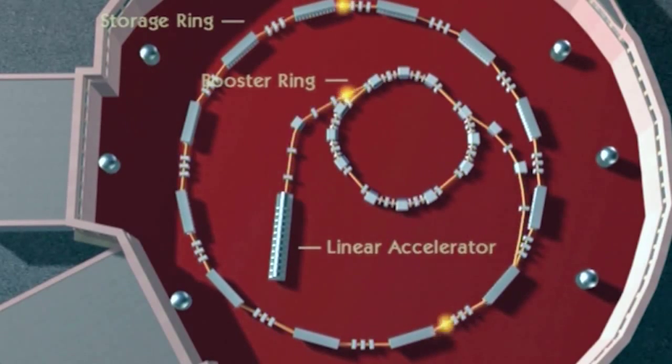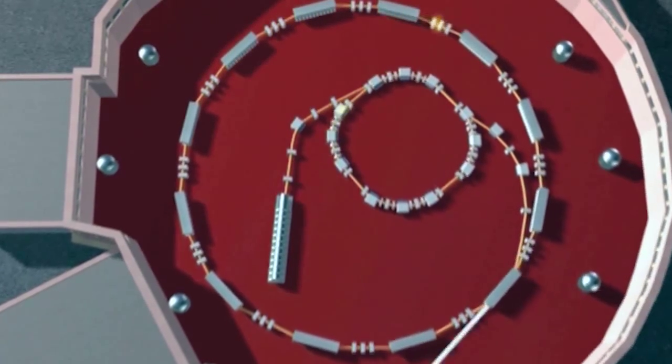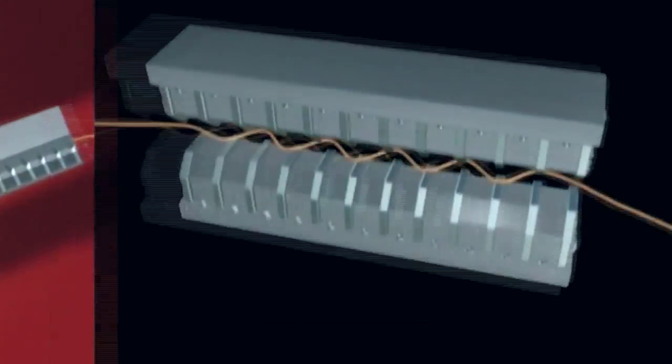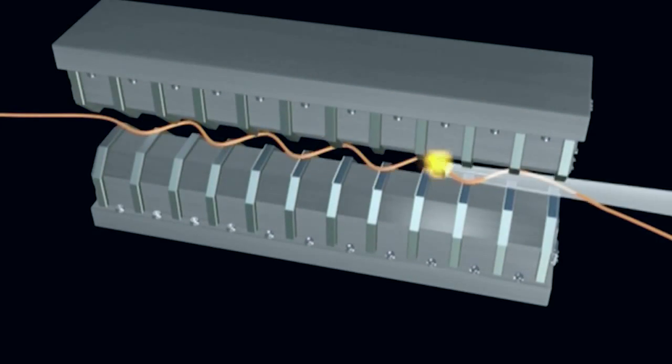From that particle accelerator emerge electrons that are accelerated that produce X-ray beams. We make X-rays by making the electrons wiggle.